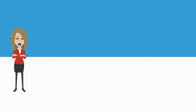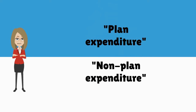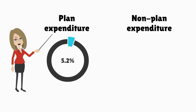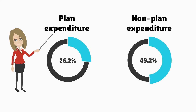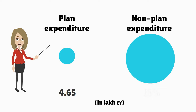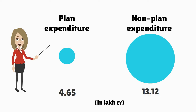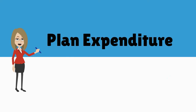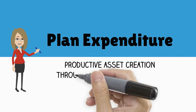India's total expenditure is divided into two broad components: plan expenditure and non-plan expenditure. 26.2 percent of the center's total spending is on plan expenditure, and 73.8 percent is on non-plan expenditure. Rupees 4.65 lakh crore is India's budgeted plan expenditure, and rupees 13.12 lakh crore is India's budgeted non-plan expenditure in 2015-16.